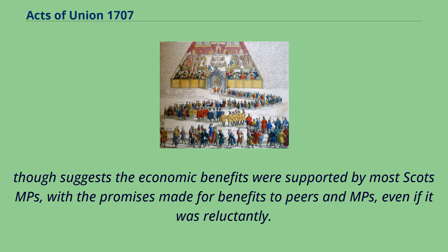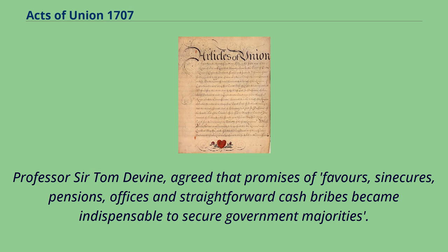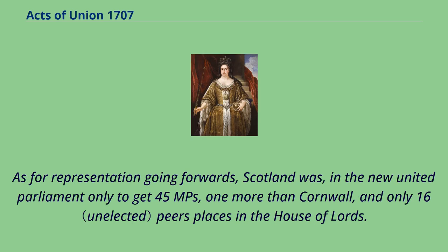Professor Sir Tom Devine agreed that promises of favours, sinecures, pensions, offices, and straightforward cash bribes became indispensable to secure government majorities. As for representation going forwards, Scotland was in the new United Parliament only to get 45 MPs — one more than Cornwall — and only 16 peers' places in the House of Lords.